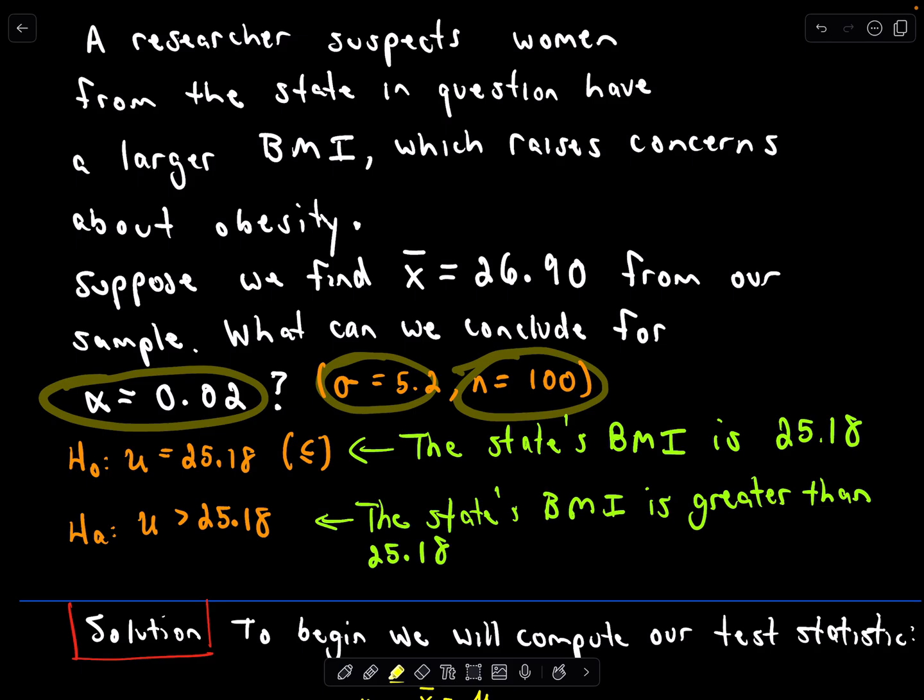Our null hypothesis in this case is going to be that the mean is still equal to 25.18, or it's less than that. The idea is that the BMI is unchanged. That's going to be our null hypothesis. Our alternative hypothesis is that the mean is actually larger than 25.18. The BMI is actually going up. That's going to be our alternative hypothesis.